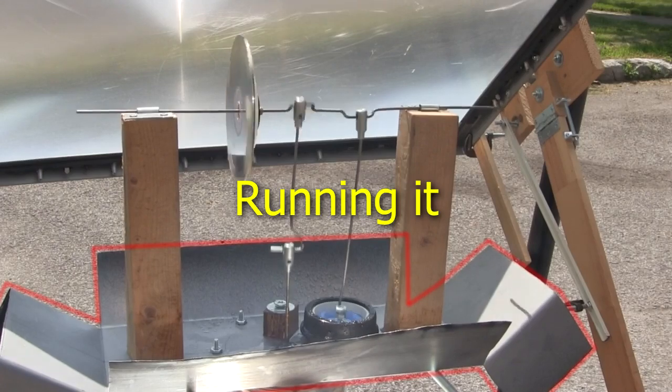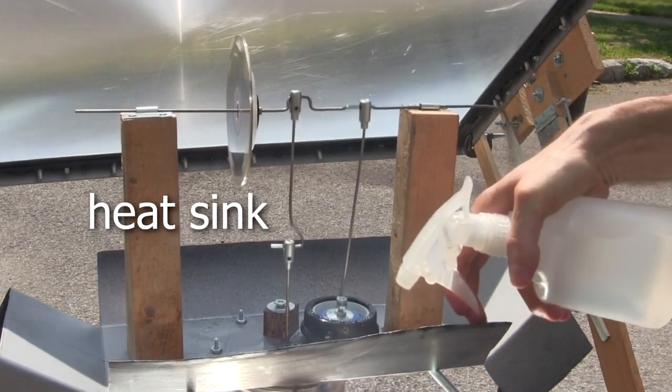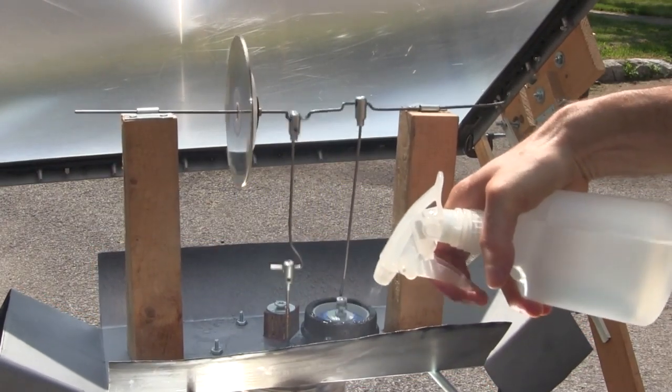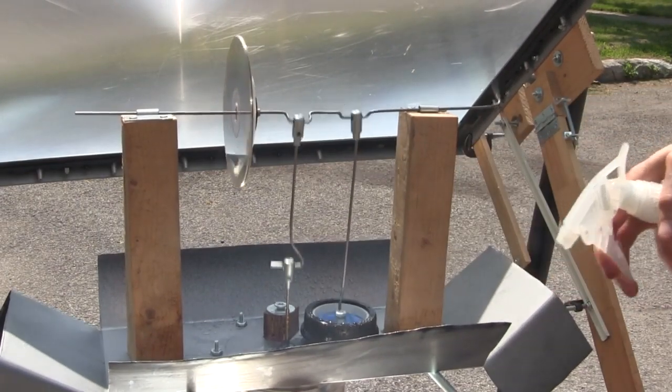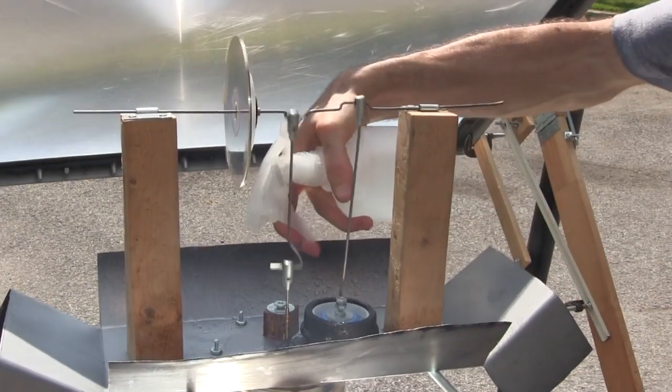And here it is running. The purpose of this big steel top plate is to act as a heat sink. It takes the heat from the hot air in the big cylinder underneath and cools it. To help with the cooling, I spray some water over the top plate.